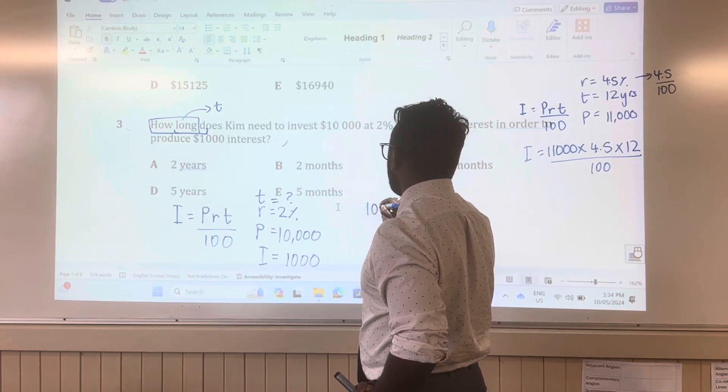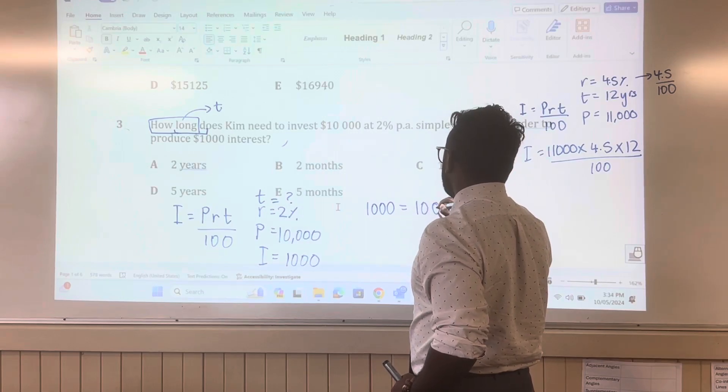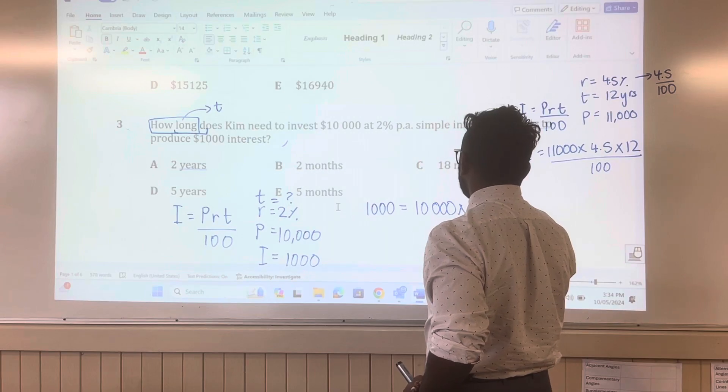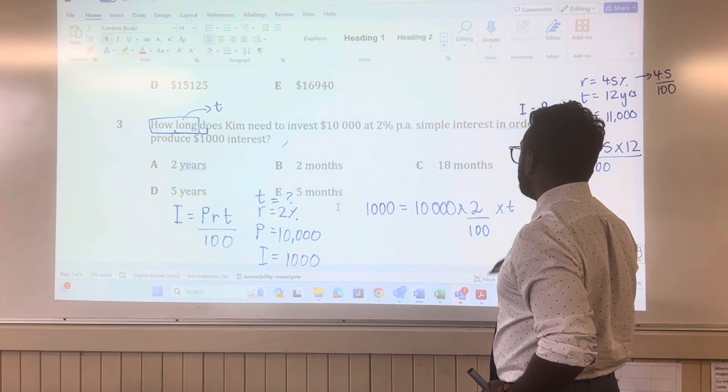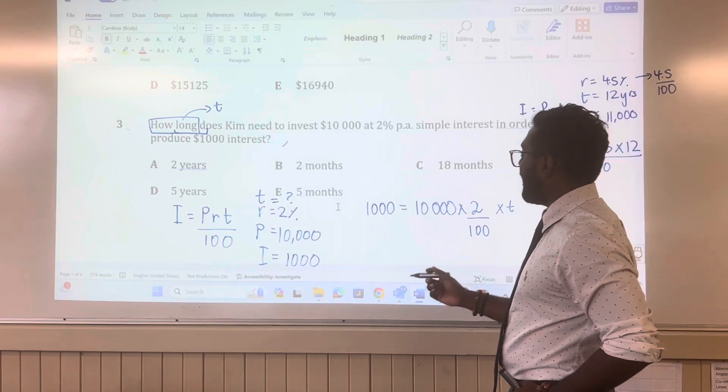So what's our I? $1,000 is equal to, what's our P? $10,000 times the rate, which is 2%, which is 2 over 100, times the T. Now, this is involving solving. You have to know how to solve. So I'm just going to do this by my hand.